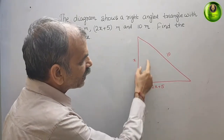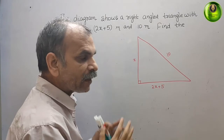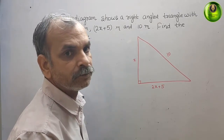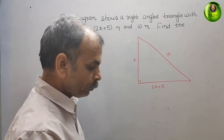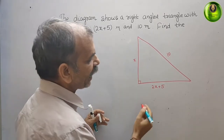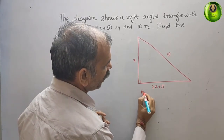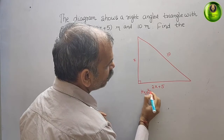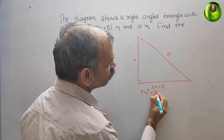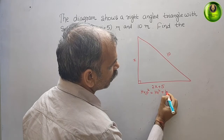We know that it is a right-angled triangle. That means it will follow Pythagoras theorem. Pythagoras theorem states that hypotenuse squared is equal to height squared plus base squared.